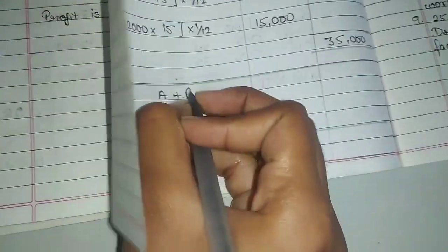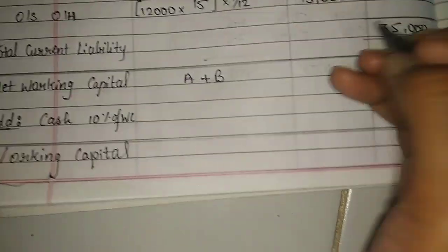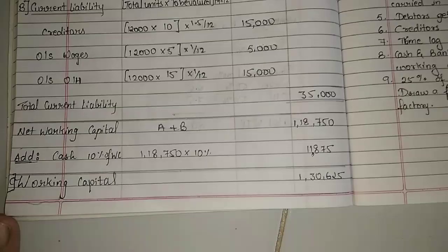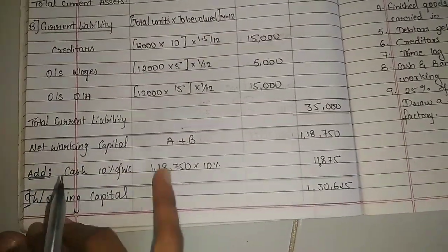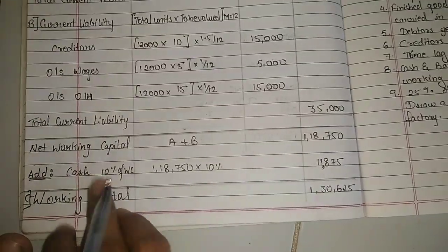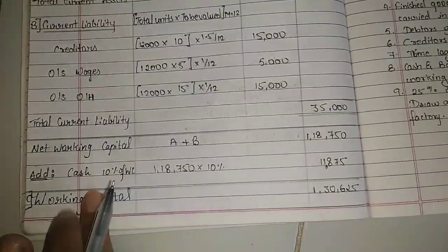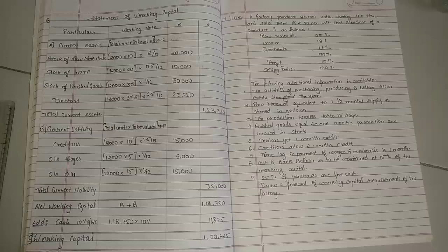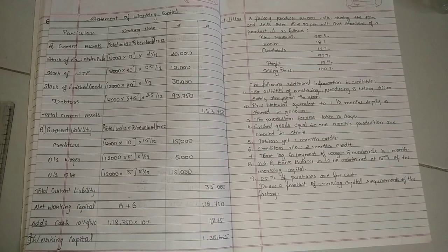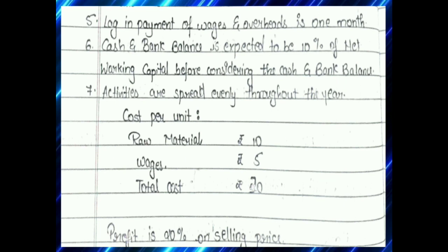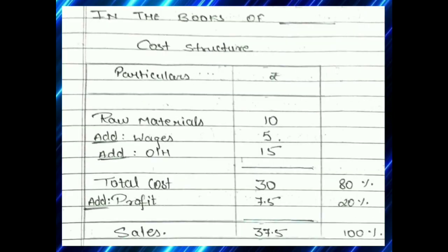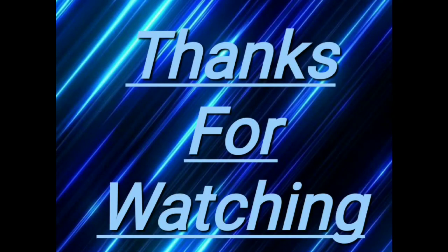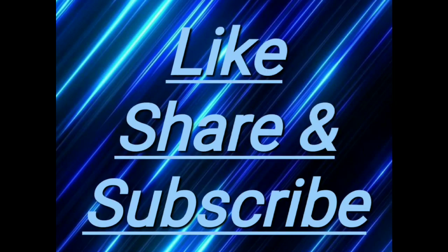Now what is net working capital? A plus B is 118,750. Here you can see 10% of net working capital gives us cash and bank balance, then we get total working capital. So here we have completed 118,000. Please like, share and subscribe to my channel.